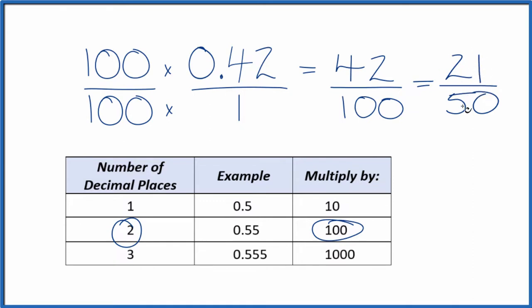If you divide 21 by 50, you get 0.42. This is Dr. B, and thanks for watching.